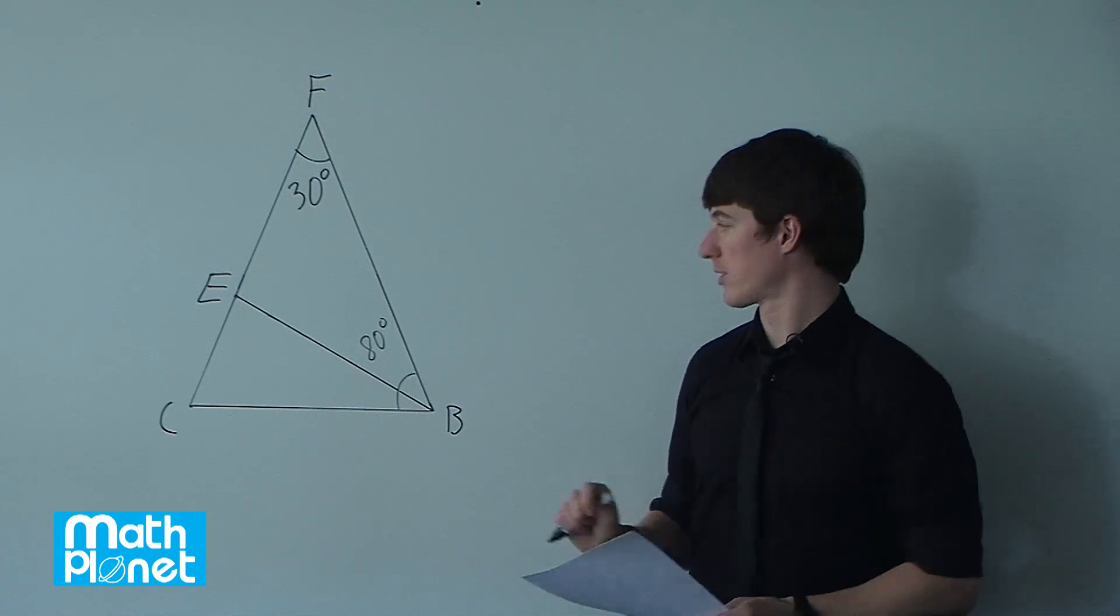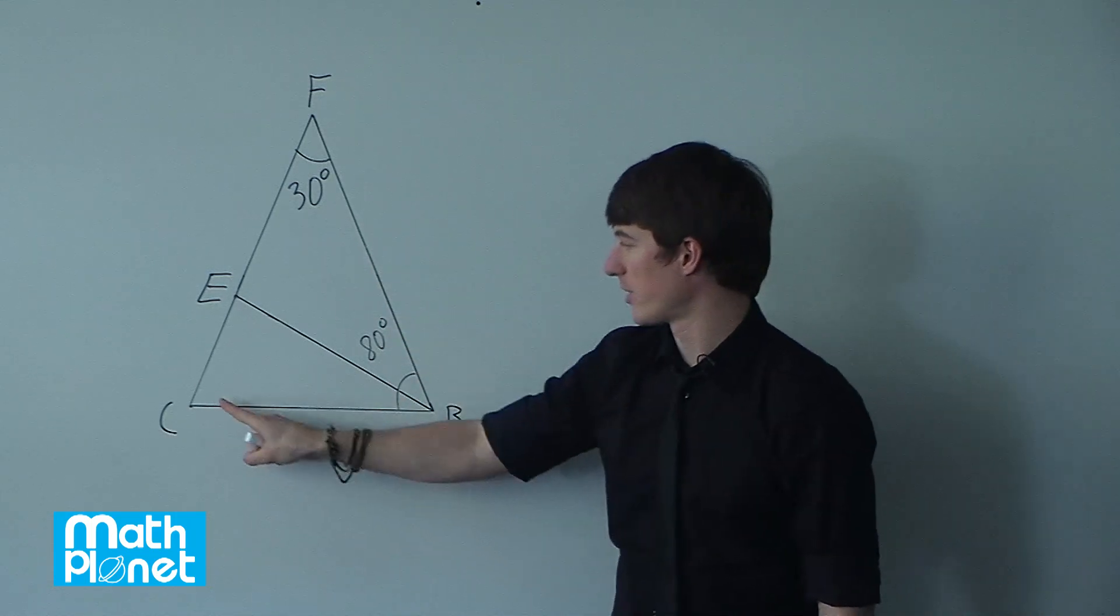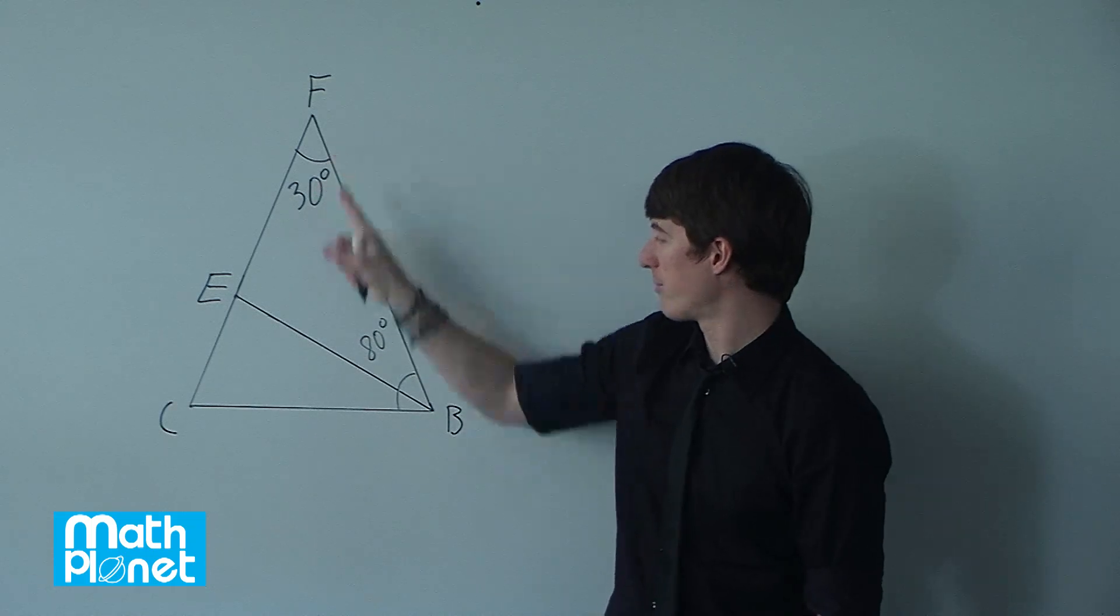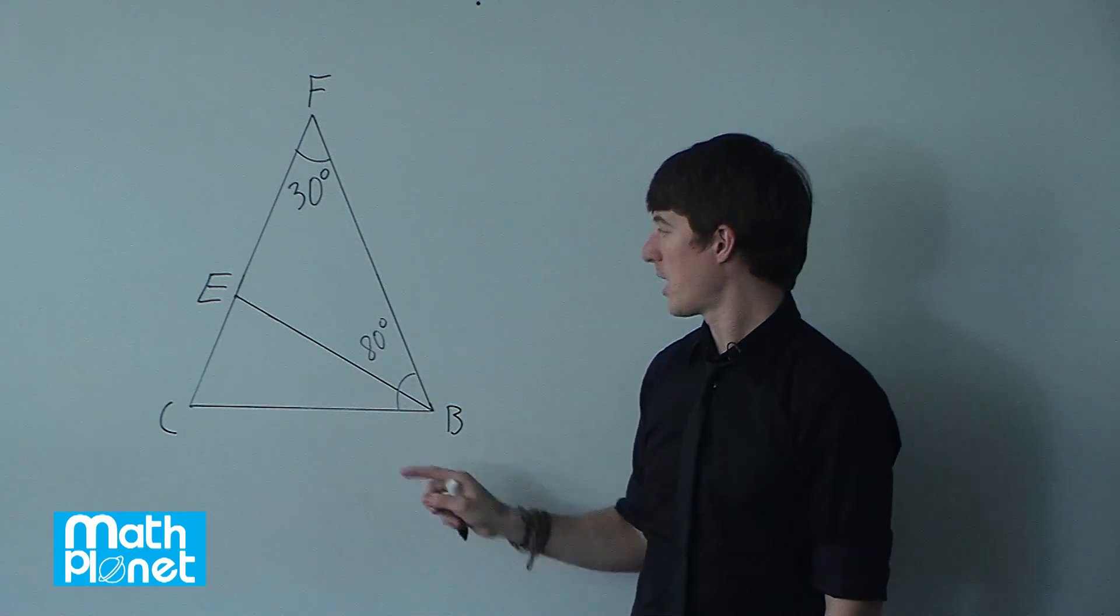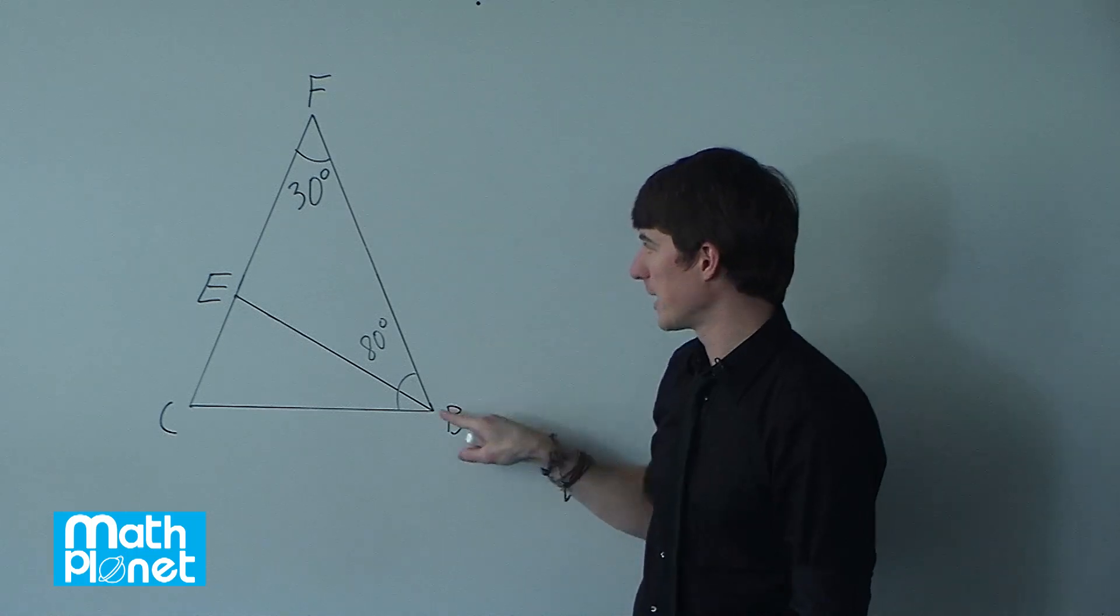We want to find two more things. We're given this and we want to find this angle C, so FCB, and this angle FBE.